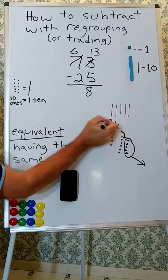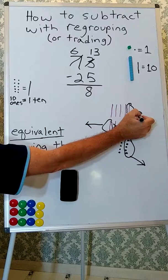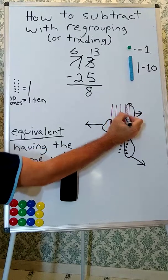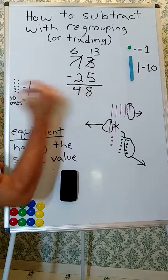Let's see. That one goes away. This one goes away, and we're left with 4 tens. So 73 minus 25 is 48.